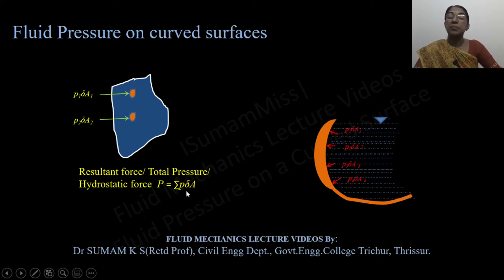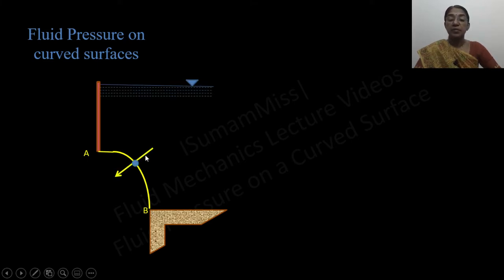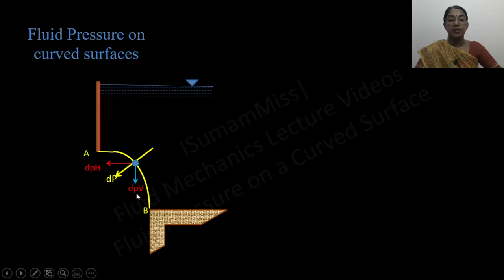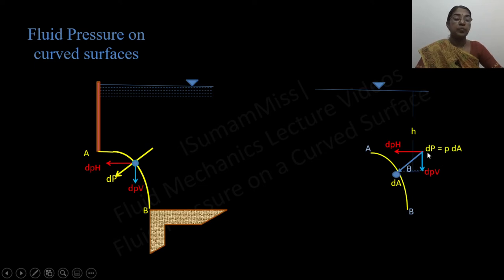This can be elaborated in more detail by considering a curved surface AB subjected to water pressure on one side. Consider a small element on this surface. The pressure force acting on this element makes an angle θ with respect to the horizontal, acting normal to the surface. This pressure force dP can be resolved into mutually perpendicular components: dP_H (horizontal) and dP_V (vertical). To calculate dP_H, consider this element having area dA at a distance h from the free surface.